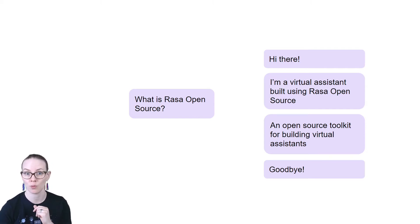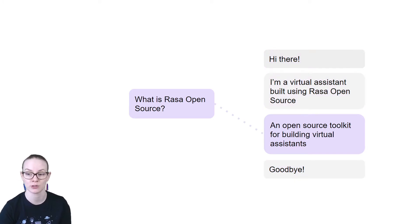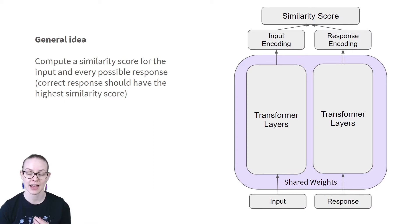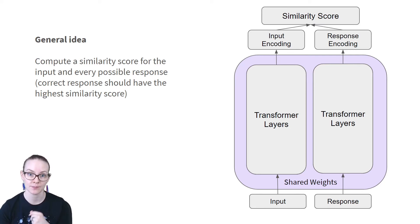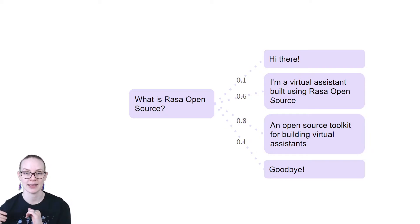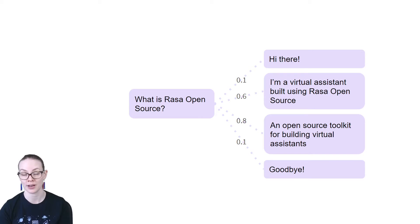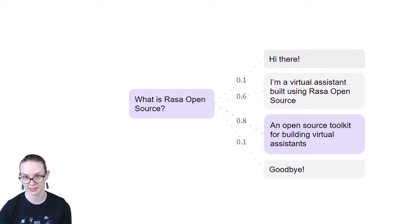For example, given the user input 'What is Rasa open source?', the correct response to select would be 'an open source toolkit for building virtual assistants.' The way ConveRT does this is that for every pair of input and possible response, a similarity score is calculated. Each output has a similarity score to the input, and the one with the highest similarity score is the correct output.